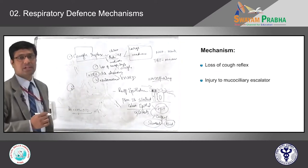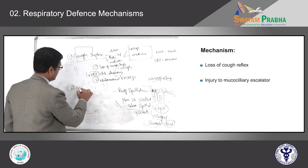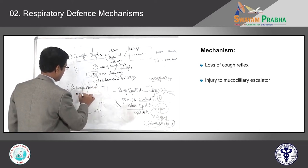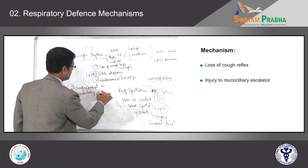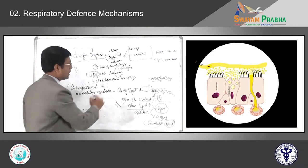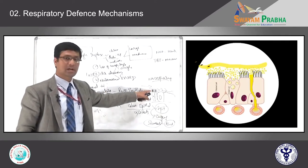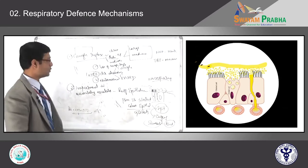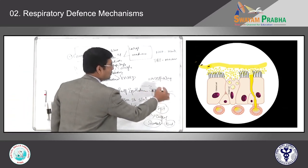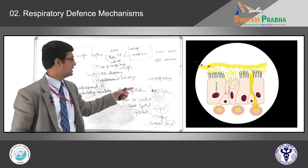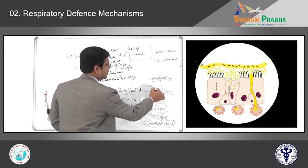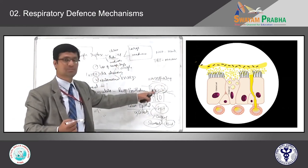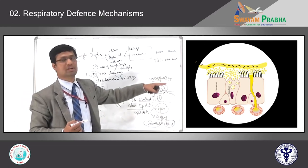The second type is impairment in the mucociliary escalator. If your respiratory tract cilia are not working properly, the dust particles entrapped in the mucus will not be pushed upwards. They start accumulating, and as more and more dust particles accumulate along with mucus, it becomes a very good medium for secondary bacterial overload. Hence these patients are more prone to develop respiratory infections.